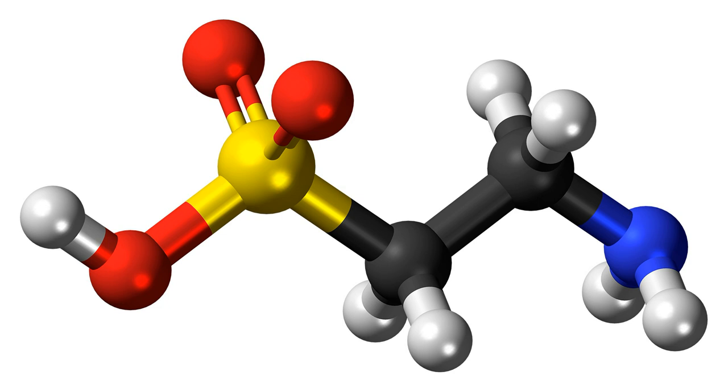Taurine, or 2-aminoethane sulfonic acid, is an organic compound that is widely distributed in animal tissues. It is a major constituent of bile and can be found in the large intestine, and accounts for up to 0.1% of total human body weight.